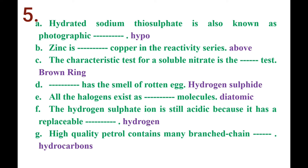Brown ring test is used to identify nitrates. The brown ring test confirms the presence of nitrate ions.